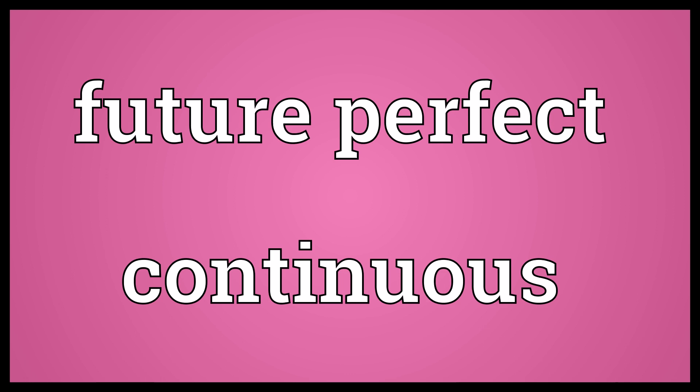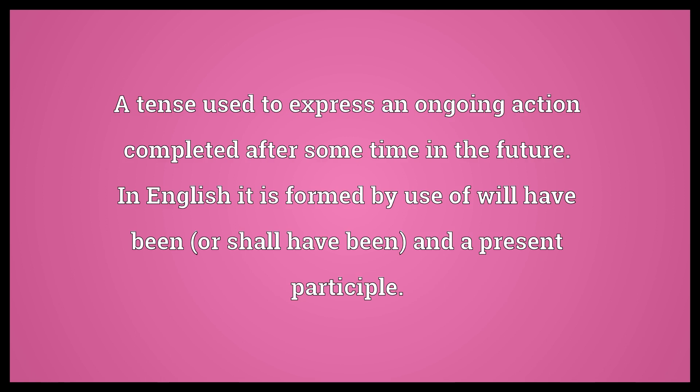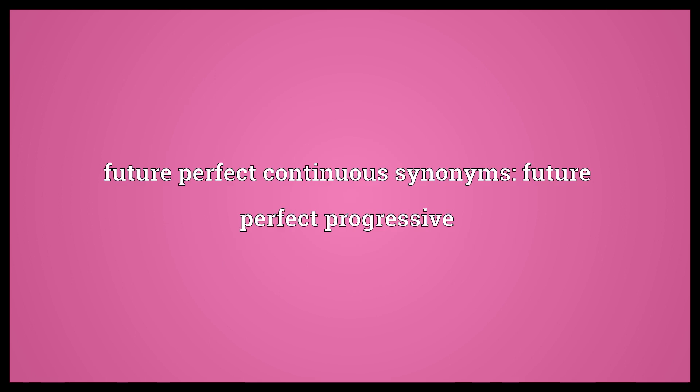Future Perfect Continuous: a tense used to express an ongoing action completed after some time in the future. In English, it is formed by use of 'will have been' or 'shall have been' and a present participle. Future Perfect Continuous synonyms: Future Perfect Progressive.